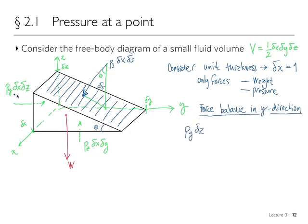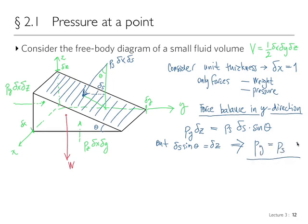For the Y-direction force balance: PY times Delta X times Delta Z — with Delta X equal to one — equals PS times Delta S times sine of theta. Using the geometric relation that Delta S times sine theta equals Delta Z, we get the simple result that PY equals PS. That is our first result: these two pressures are equal.